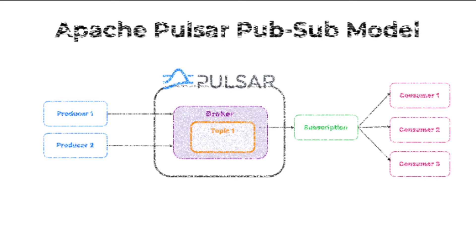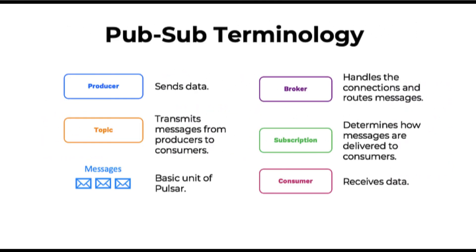Let's recap the terminology and components in the Pulsar PubSub model. 1. Producers send data. 2. Topics transmit messages from producers to consumers. 3. Messages are the basic unit of Pulsar and carry the data. 4. Brokers handle the connections and route messages. 5. Subscriptions determine how messages are delivered to consumers. 6. Consumers receive data.